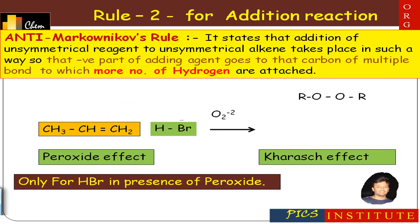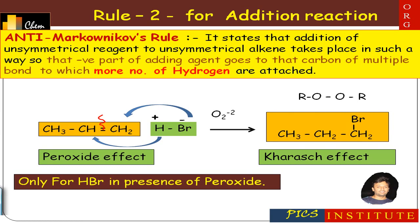The reaction involves addition of HBr in the presence of peroxide. Splitting of the bond takes place by homolytic bond fission; the negative part goes to that carbon which possesses more number of hydrogens, and the positive part goes to the other carbon, to form 1-bromopropane. All other reactions involve Markovnikov's addition, whereas only the addition of HBr in the presence of peroxide on unsymmetrical alkene follows anti-Markovnikov's rule.